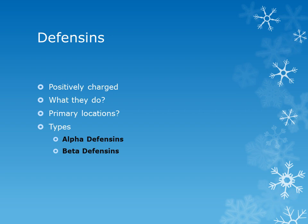Beta defensins are located in the respiratory tract. So the locations are: neutrophils and Paneth cells of the intestinal crypts contain alpha defensins, while the respiratory tract contains beta defensins.